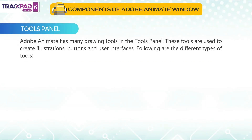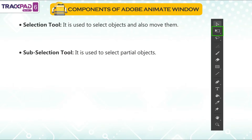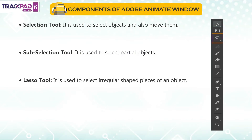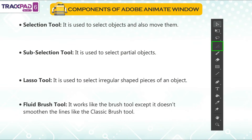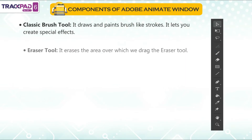Tools panel: Adobe Animate has many drawing tools in the tools panel. These tools are used to create illustrations, buttons and user interfaces. Selection tool: it is used to select objects and also move them. Subselection tool: it is used to select partial objects. Lasso tool: it is used to select irregular shaped pieces of an object. Fluid brush tool: it works like the brush tool except it doesn't smoothen the lines like the classic brush tool. Classic brush tool: it draws and paints brush-like strokes and lets you create special effects. Eraser tool: it erases the area over which we drag the eraser tool.